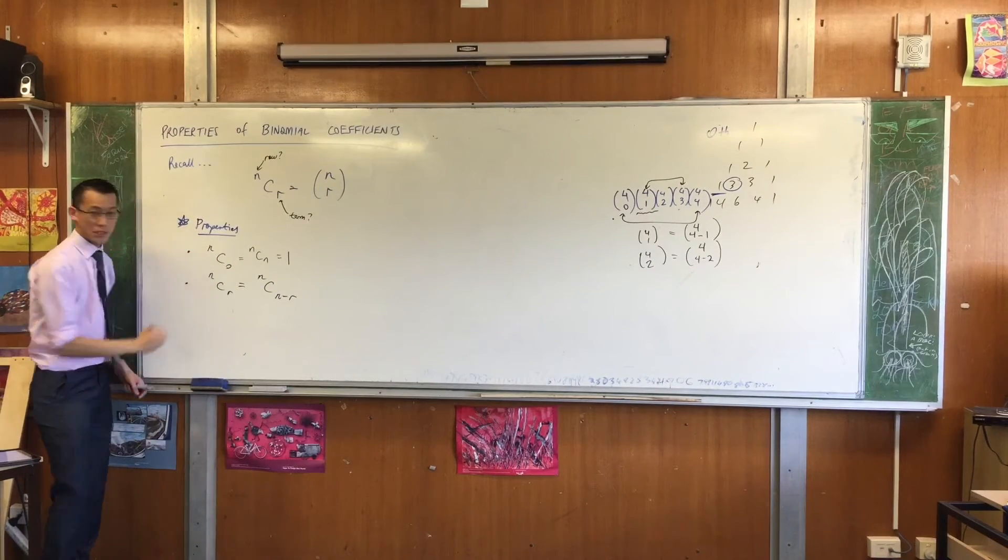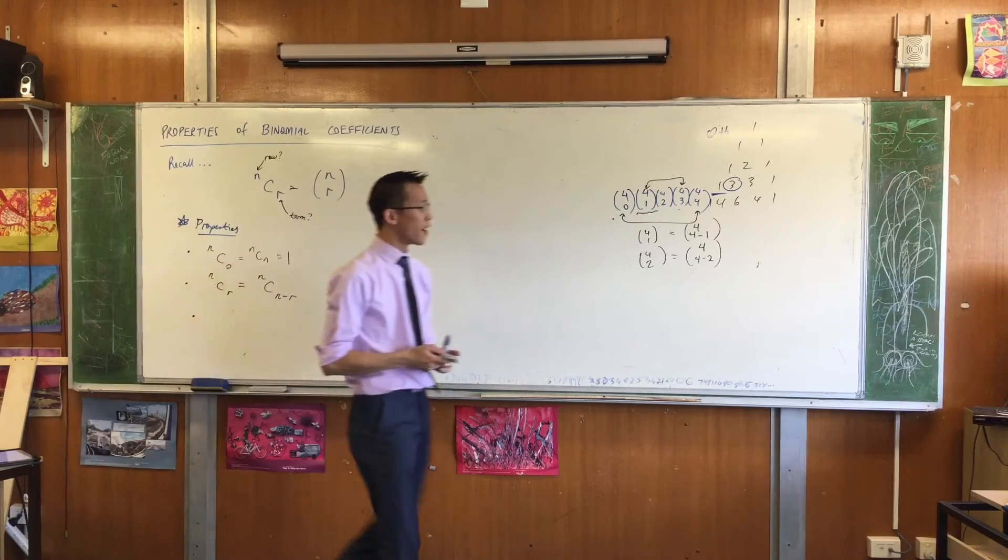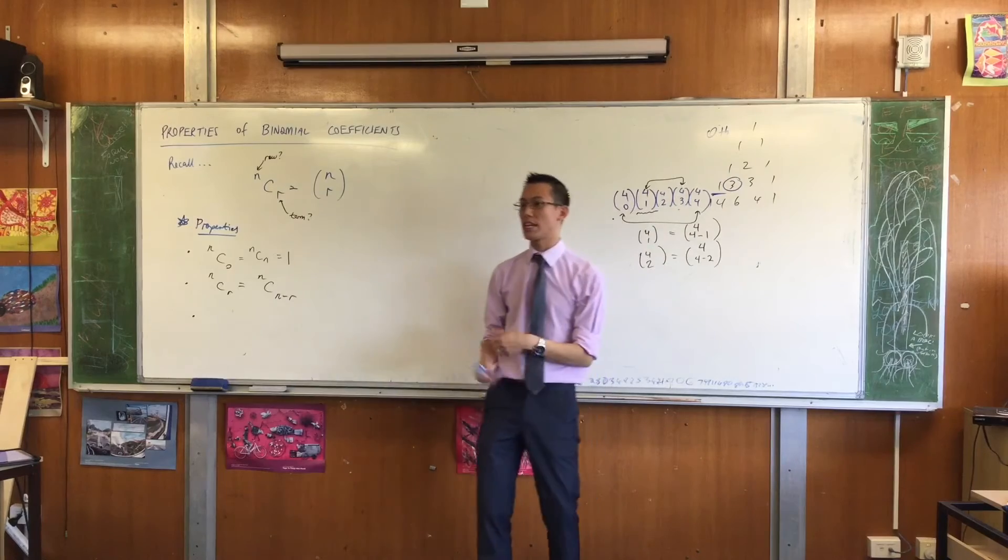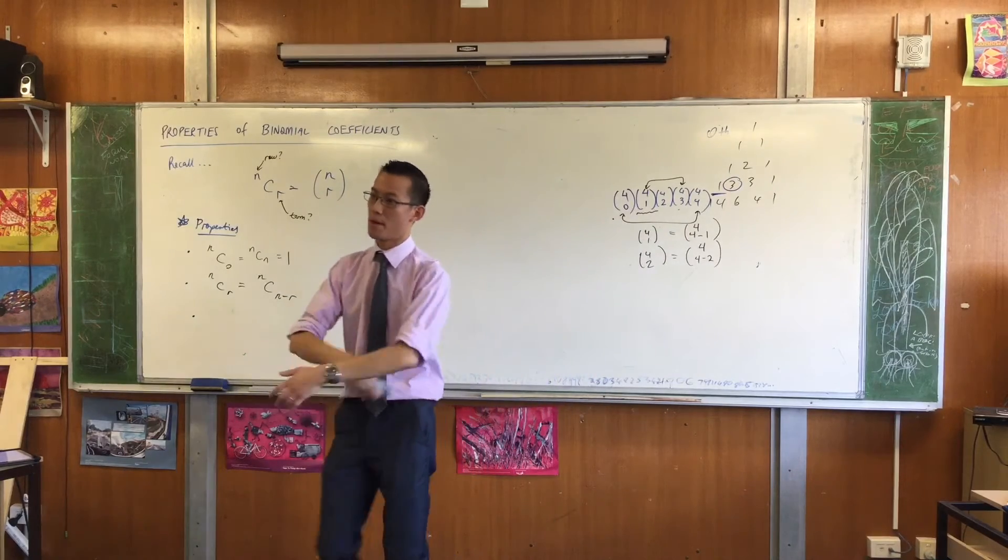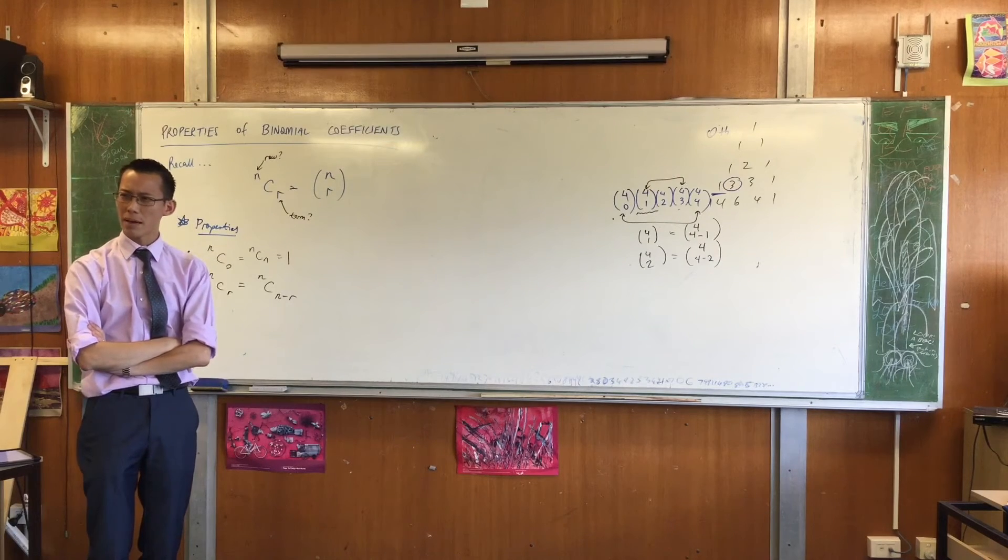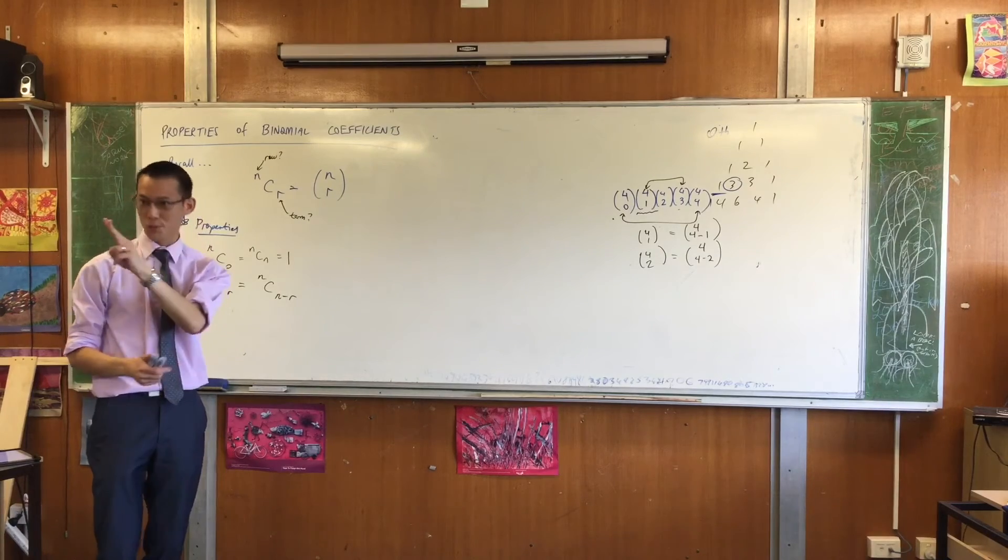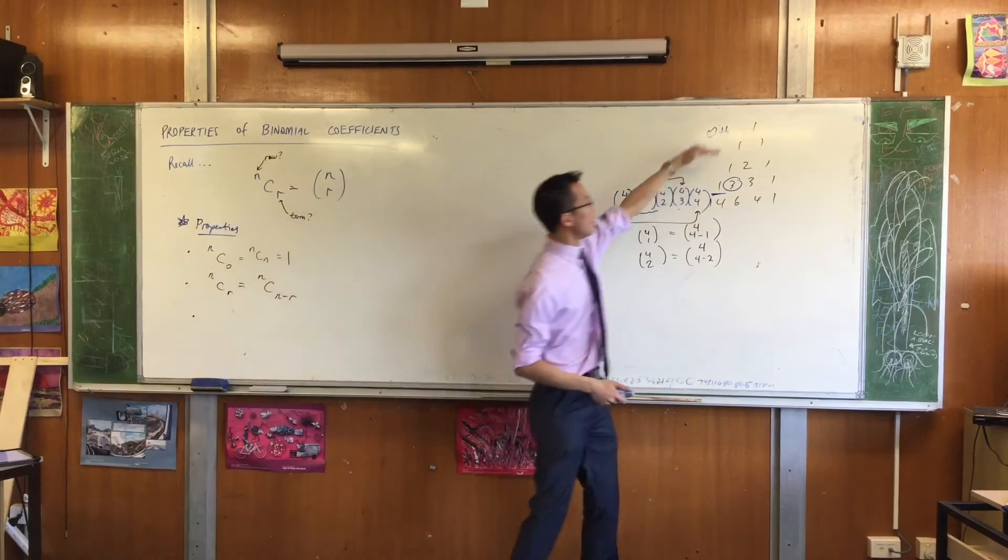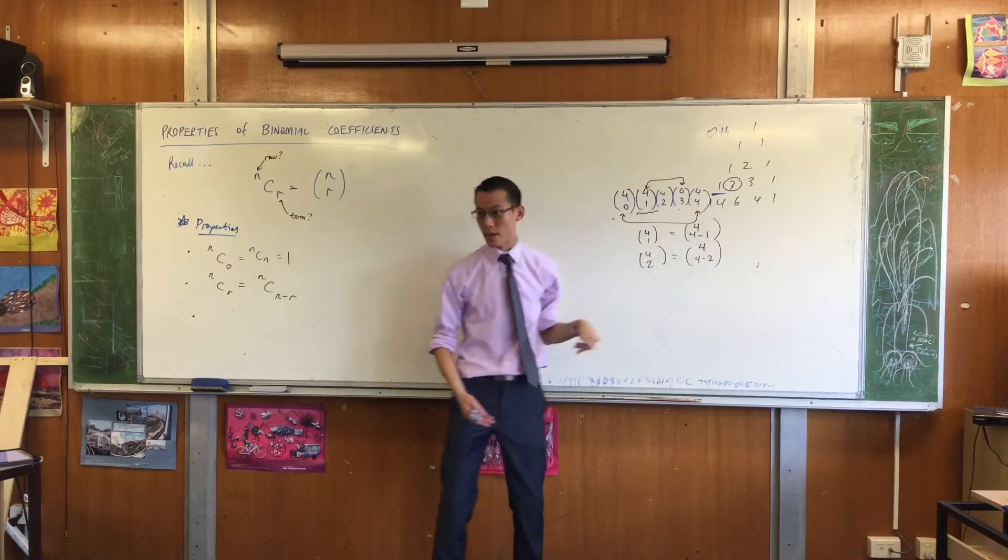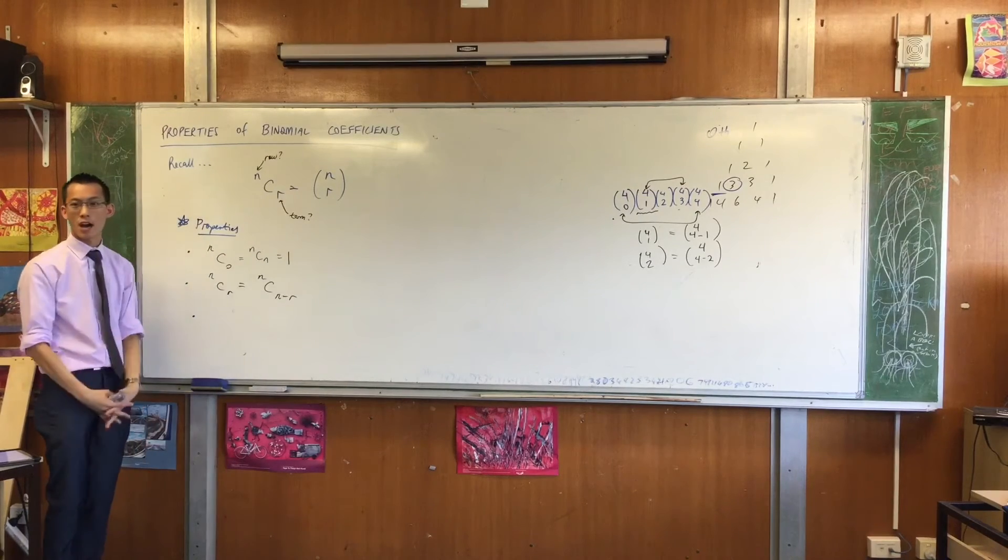The third property is, do you remember when I asked you to add up all of the coefficients in any individual row? Do you remember the sums of each of the binomial coefficient rows had a weird pattern? What was that pattern? They were powers of 2. Do you remember that? Just add them up quickly. 1, 2, 4, 8, 16, etc. So how could I state that property in NCR notation?